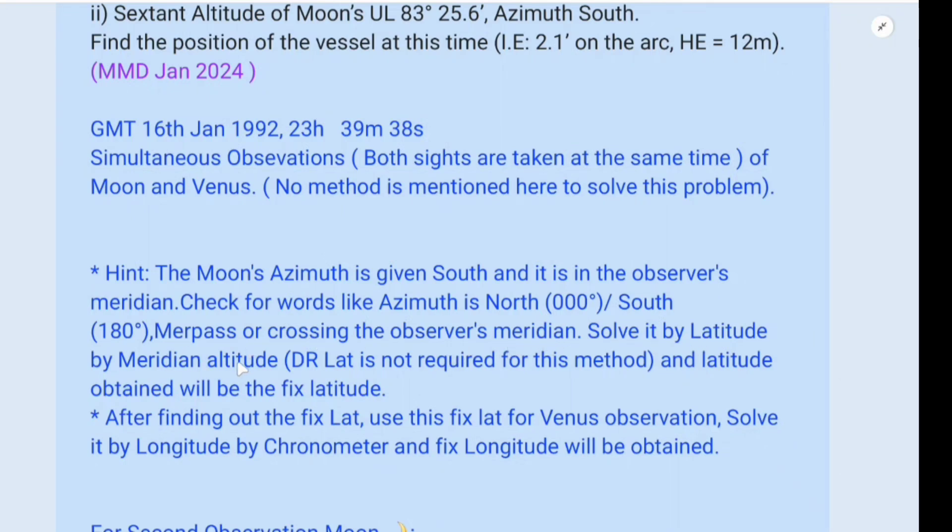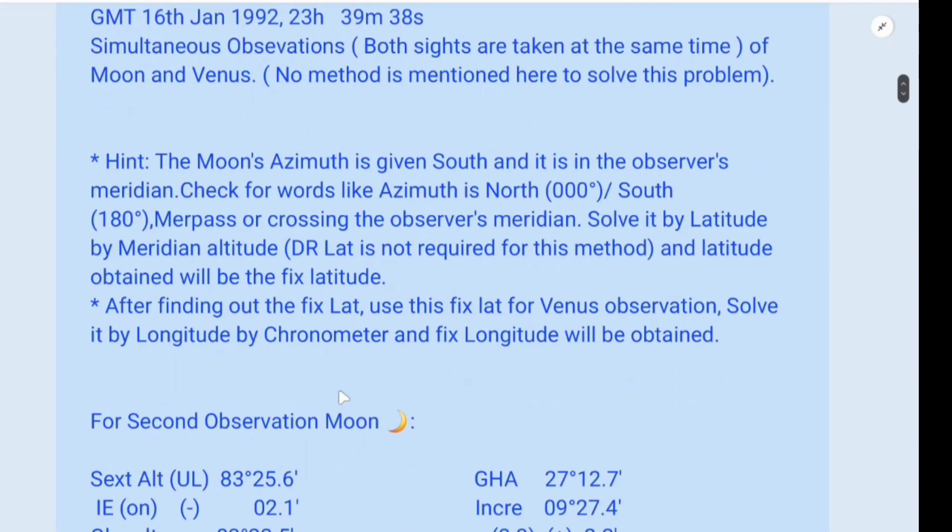Solve it by latitude by meridian altitude. DR lat is not required for this method, and latitude obtained will be the fix latitude. So after finding out the fix latitude, use this fix lat for Venus observation and solve it by long by Crone method and fix long will be obtained.